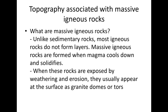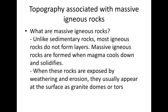When these rocks are exposed to the surface by weathering and erosion, they usually appear at the surface as granite domes or tors. Now, what are the intrusive bodies associated with massive igneous rocks — the landforms that form from massive igneous rocks?